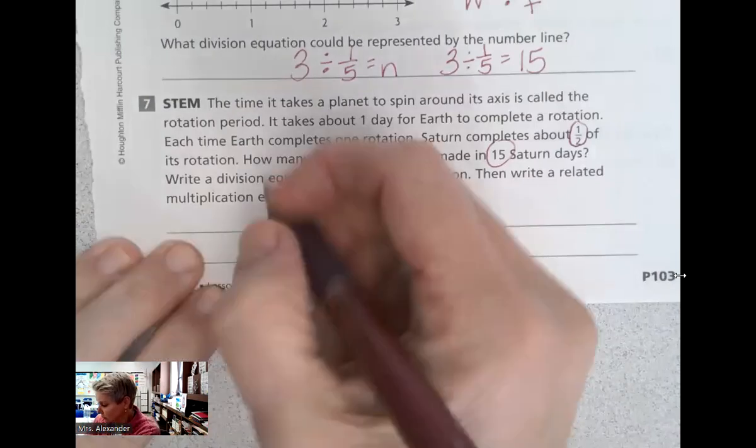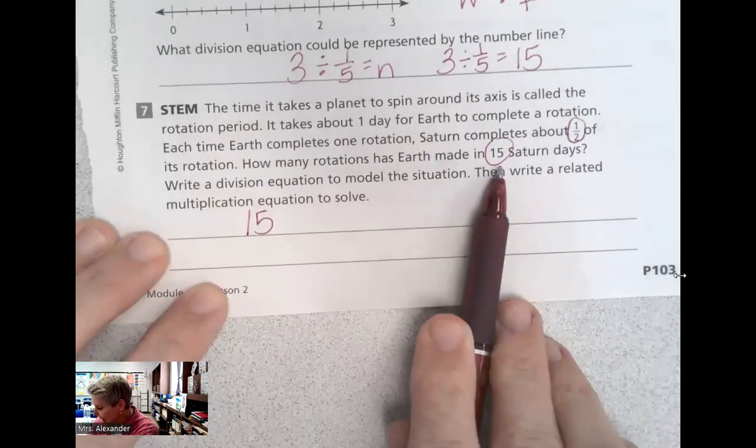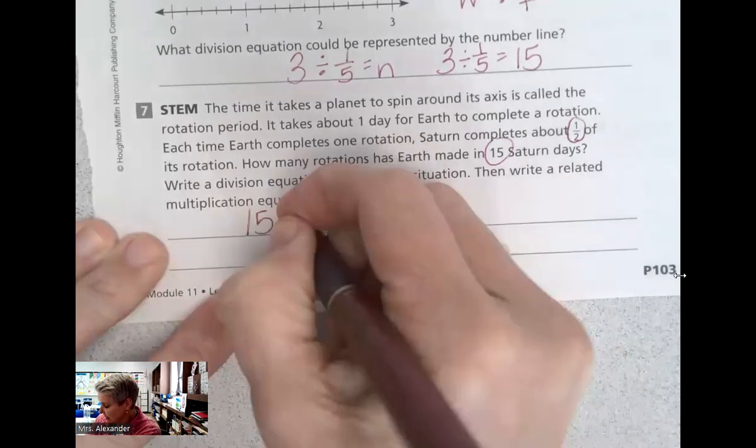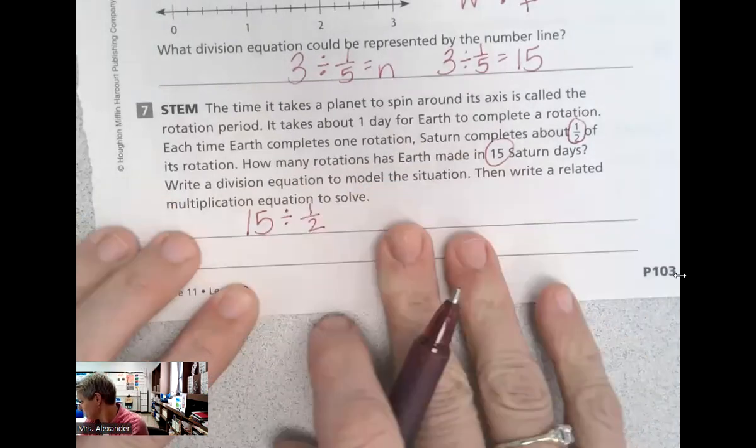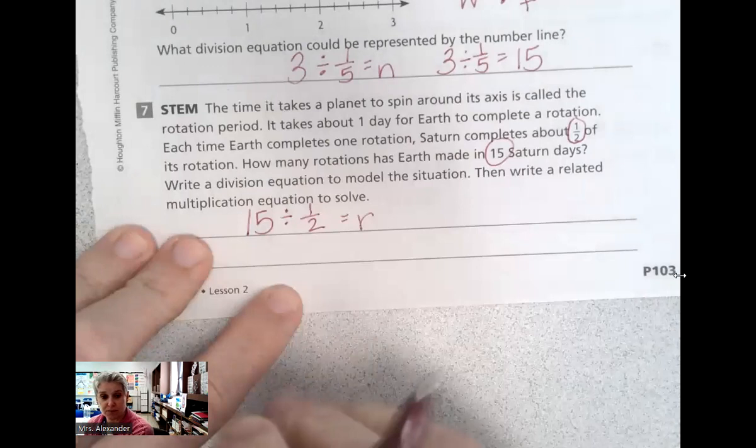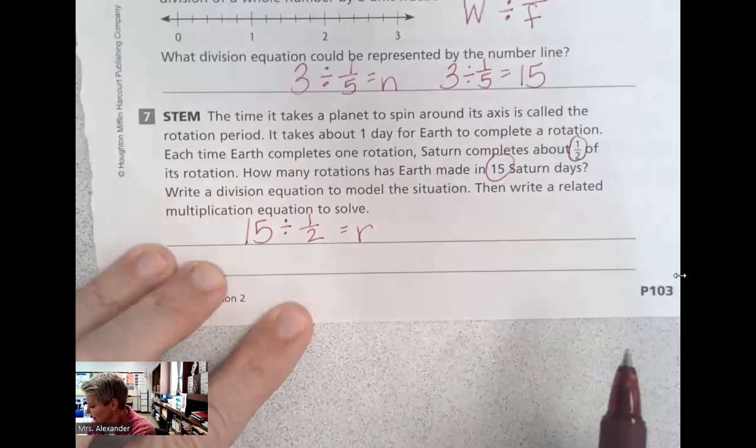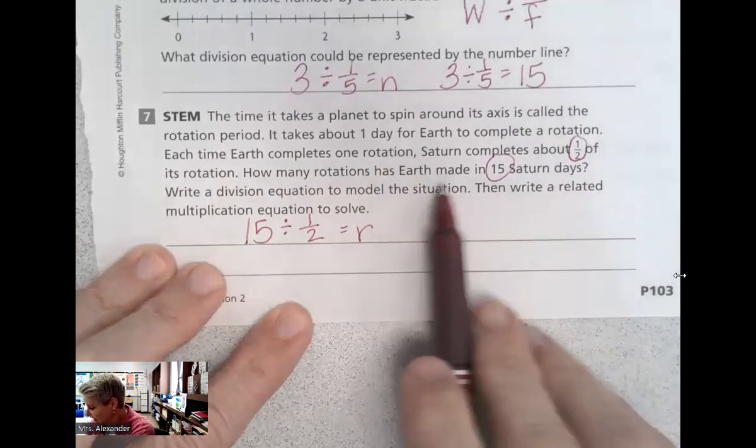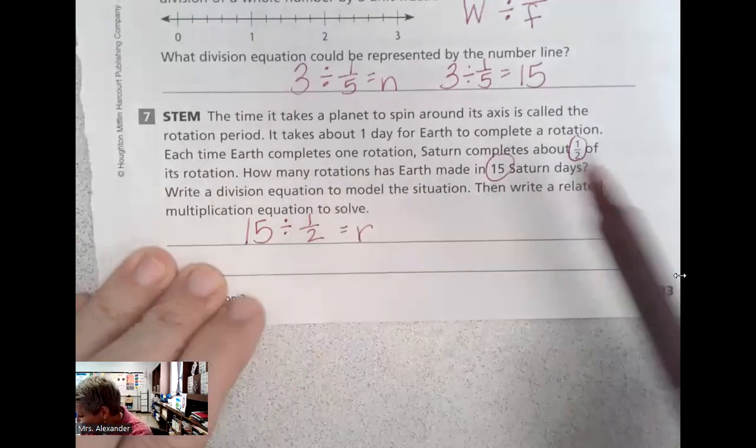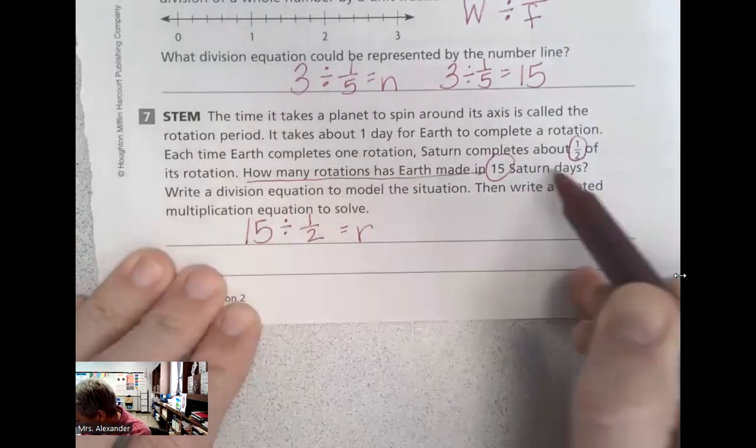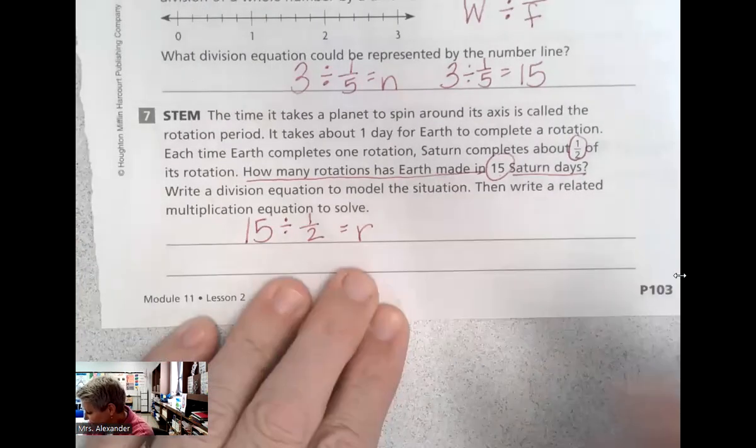So we have 15 rotations. If we're going to find out how many rotations Earth has made in 15 Saturn days, 15 days divided by that one half equals the number of rotations. So Saturn has made 15, Saturn, I'm sorry, Earth has made 15, oh, I've got to get this straight, sorry. How many rotations has Earth made? I had it right the first time, 15 Saturn days. So this is going to tell us Earth's rotations, 15 Saturn days.